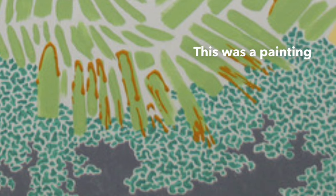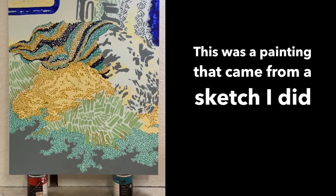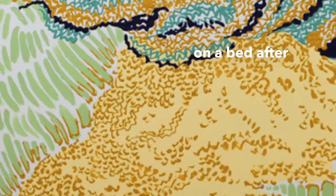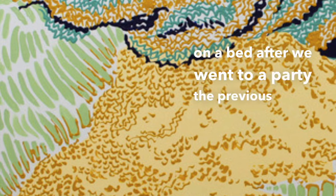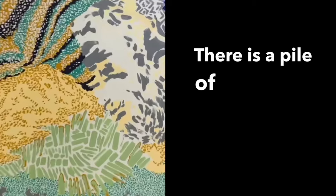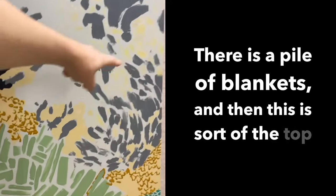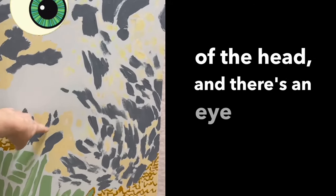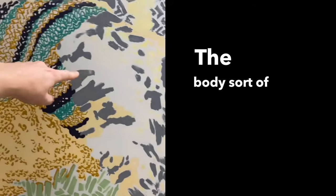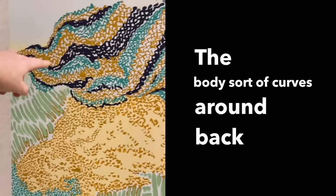This painting came from a sketch I did of Sam sleeping on a bed after we went to a party the previous night. There's a pile of blankets, and then this is sort of the top of the head and there's an eye here. The body sort of curves around back here.